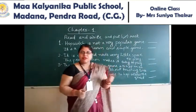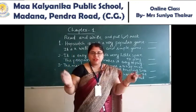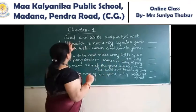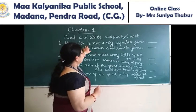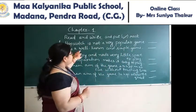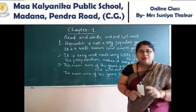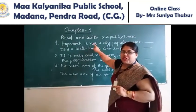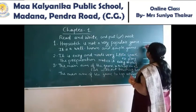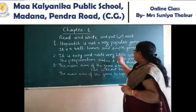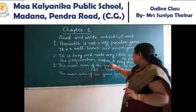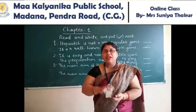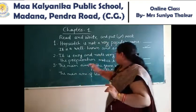Now students, you understood what hopscotch is. After reading this lesson, we have to know the rules and regulations. You have to print these lines and put a tick mark wherever it is correct. Look at this — Read and Write and put a tick mark. It is written: 'Hopscotch is not a very popular game.' That is wrong — it is a popular game, so no tick there. 'It is a well-known and simple game.' That is right — tick. 'It is easy and needs very little space to play.' Yes, correct — it needs only a little space, only 8 squares. Also, 'The preparation makes it easy to play' — if you have 8 squares ready and the marker, all preparations done, then it will be easy to play. Tick.